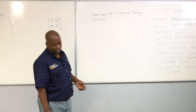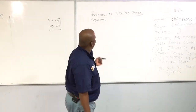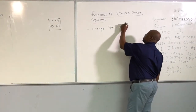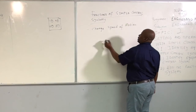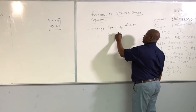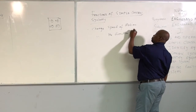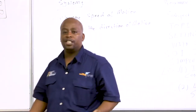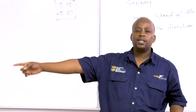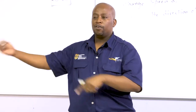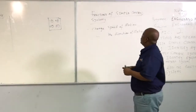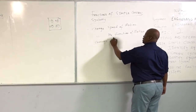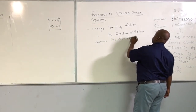Now I want us to discuss the functions of these simple control systems. These control systems can change the speed of motion, they can change the direction of motion, and they can also change the direction of rotation. For example, an electric gate is able to go in a clockwise direction, which closes the gate, and in an anti-clockwise direction, which opens the gate.